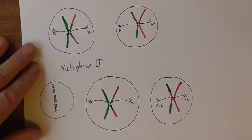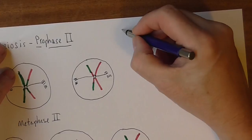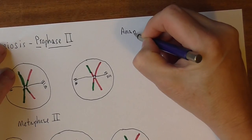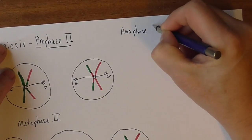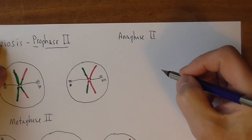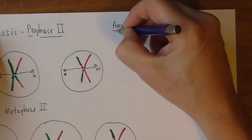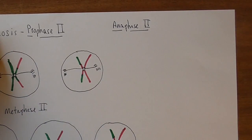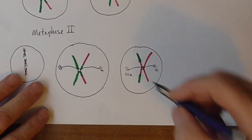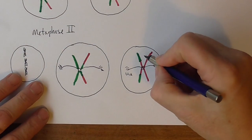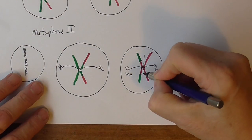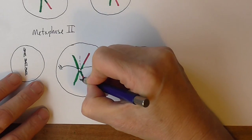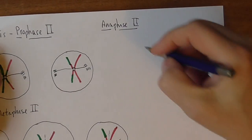Now the next stage is anaphase 2. In anaphase 2 the tetrads pull apart. They pull apart. So they finally pull apart. So what happens is they'll separate here, like that. And they'll separate there. So they finally pull apart.